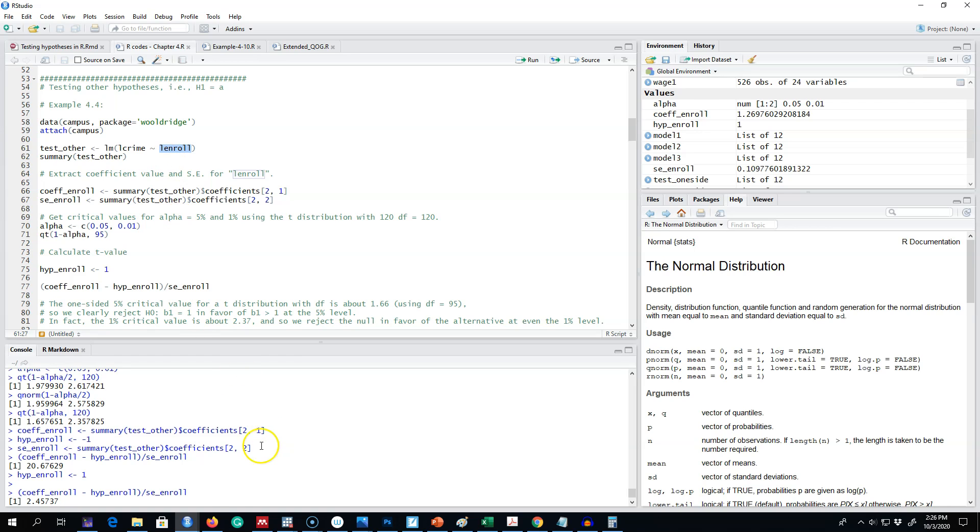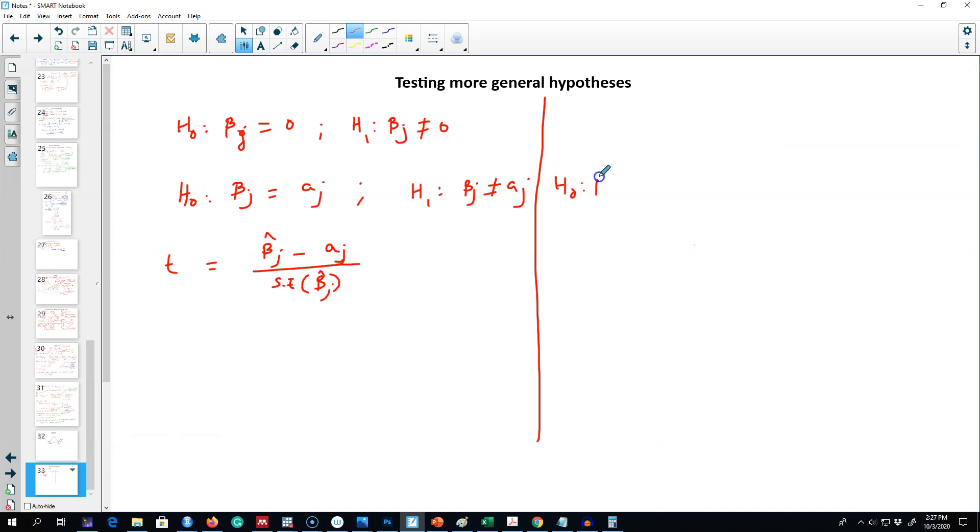So a more interesting hypothesis to test would be that the elasticity of crime with respect to enrollment is 1. We're gonna set up our null hypothesis that beta of enrollment equals 1. This means that a 1% increase in enrollment leads to, on average, a 1% increase in crime. So this is our null hypothesis, and our alternative hypothesis would be it is not equal to 1.